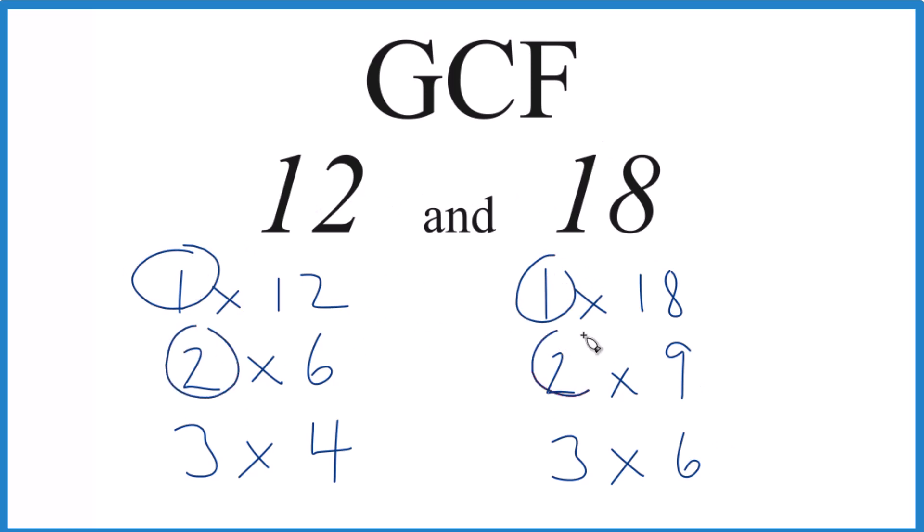2, 3, that's a factor of both of them, and then 6. And 6 is the largest number. So 6 goes into both 12 and 18 evenly. That makes it the greatest common factor.